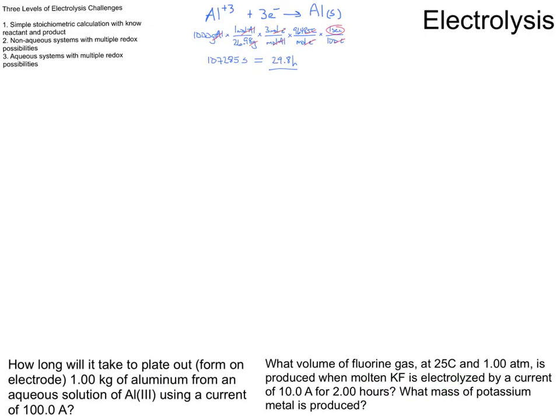So molten KF. If I have molten potassium fluoride, what I really have floating around is potassium plus and fluoride minus. That's what I really have.